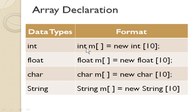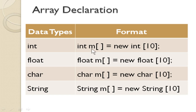Now we are going to see how to declare an array. You have different data types on the left-hand side and the right-hand side shows the format to be used for each data type. For integer, you use the integer keyword and the array variable with open and close square brackets — that should be empty — then an equal to sign, then the new operator, then the integer keyword again, and then the subscript value. This 10 represents the total number of elements you can store. M is the array variable. Same way, you can create it for float, char, and String — only the data type needs to be changed.